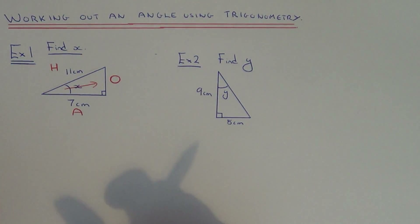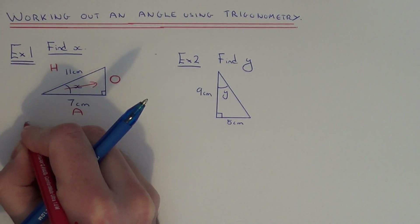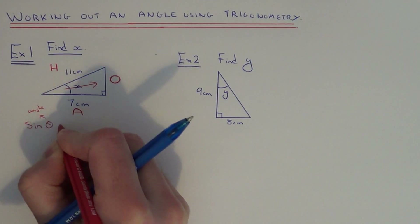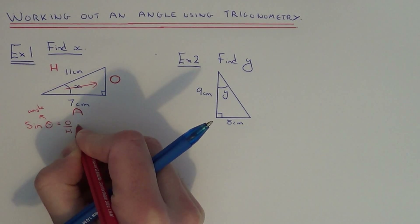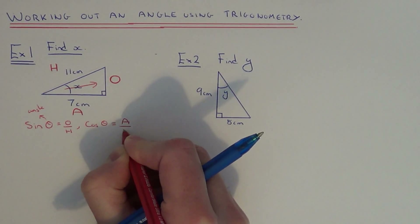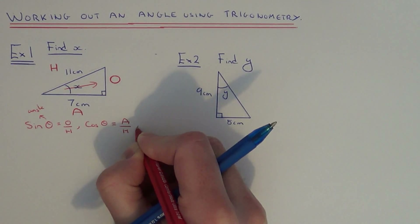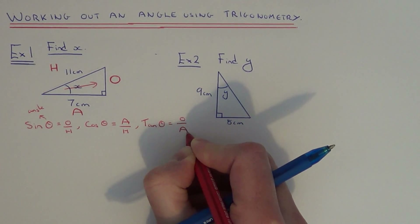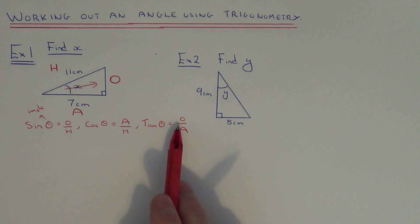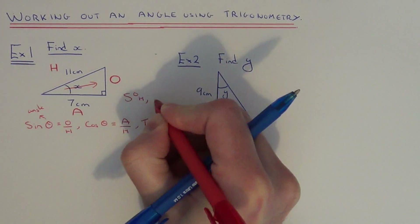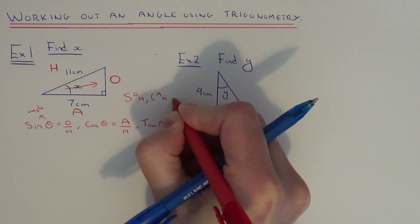We've now got to decide which one of our three trigonometric formulas to use. Our three formulas are: sin θ equals opposite over hypotenuse; cos θ equals adjacent divided by hypotenuse; and tan θ equals opposite over adjacent. If you're struggling to remember these formulas, you can remember the word SOHCAHTOA.